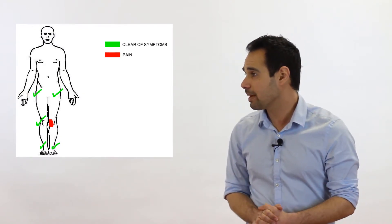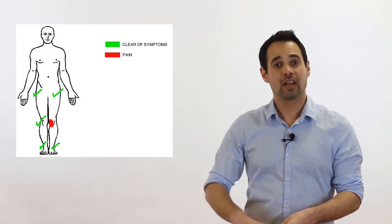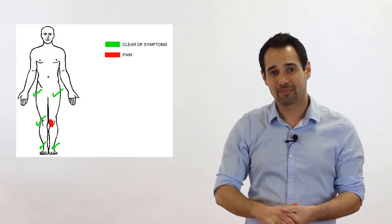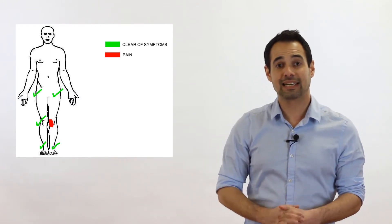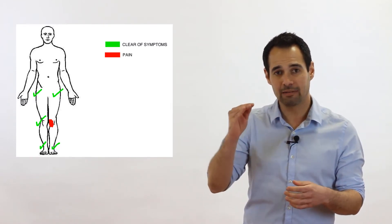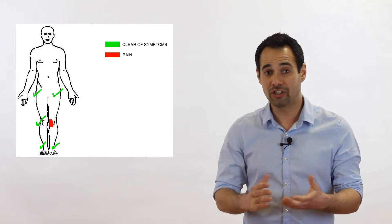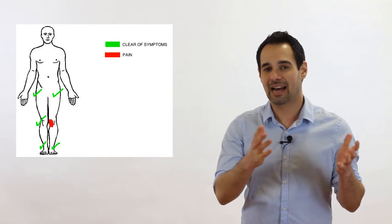Let's go through some examples to tie all of this together, focusing on what we need to do for our clearing assessment, not our main clinical assessment. Our first patient has pain at the knee with no other symptoms anywhere else. Always above and below means we need to clear the hip and the ankle through range of movement testing with overpressure. Our patient doesn't have any spreading or neuro symptoms, so nothing else is needed for the clearing assessment.